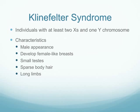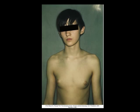Looking at a disorder involving the Y chromosome: in Klinefelter syndrome we have two Xs and one Y. The person will have a male appearance but may develop female-like breasts, have small testes, sparse body hair, and long limbs. Here is a picture of a patient with Klinefelter syndrome showing some of these developmental abnormalities.